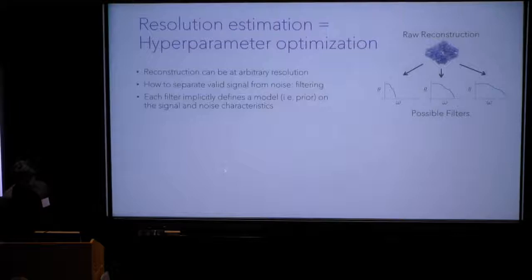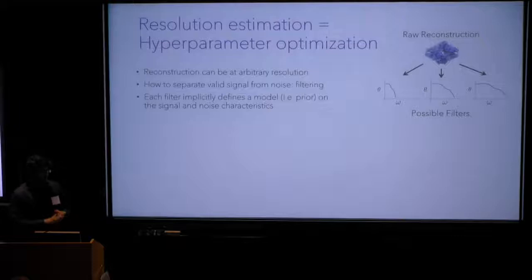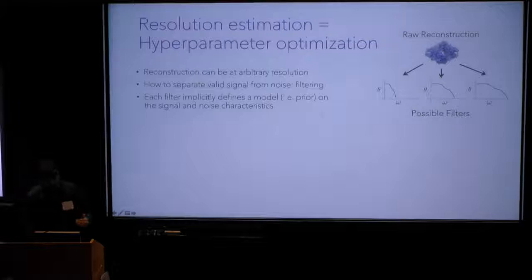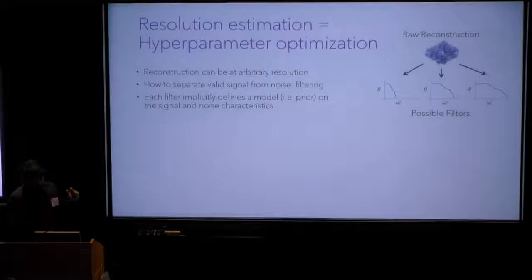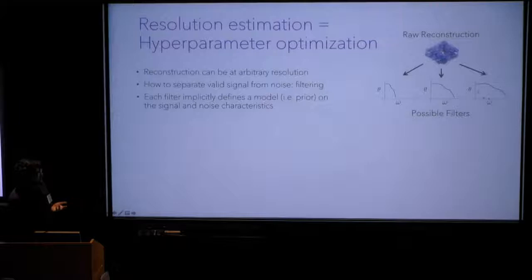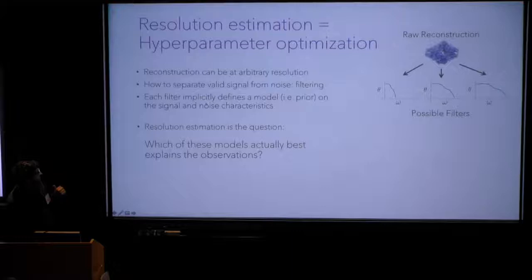Consider a typical single particle dataset: there's a whole bunch of particles and you can do a reconstruction up to an arbitrary resolution, up to the Nyquist rate. Of course that won't be correct — lots of the raw reconstruction will be wrong. The question about resolution estimation is how to separate valid signal from noise. That process often looks like filtering, where we think about the structure in some basis and throw away information in certain directions that isn't correct. So the question of resolution estimation becomes: out of some family of possible filters we could apply to a reconstruction, which one separates signal from noise?